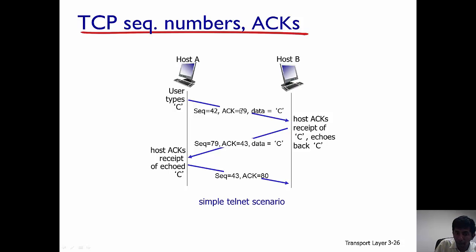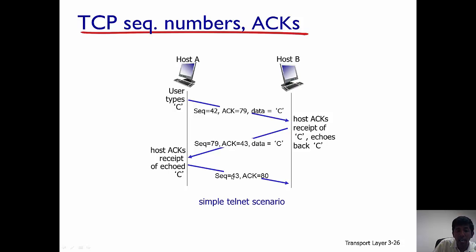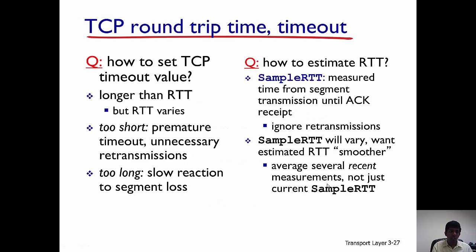To make it simple: you take the acknowledgement number and put it as the sequence number in the reply, because that's the next byte the other side wants to receive. To determine the acknowledgement number, you take the sequence number from the sender and add the number of bytes sent — in this case, 42 plus 1 equals 43. Similarly, host A takes acknowledgement 43 as the sequence number, and since B sent sequence number 79 with 1 byte, it calculates 79 plus 1 equals 80 as the acknowledgement number.